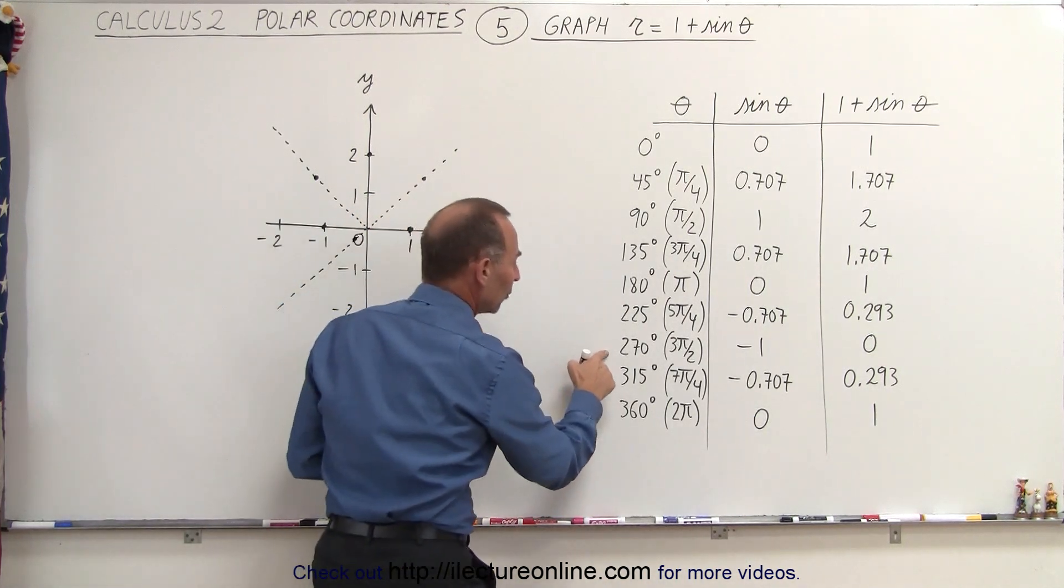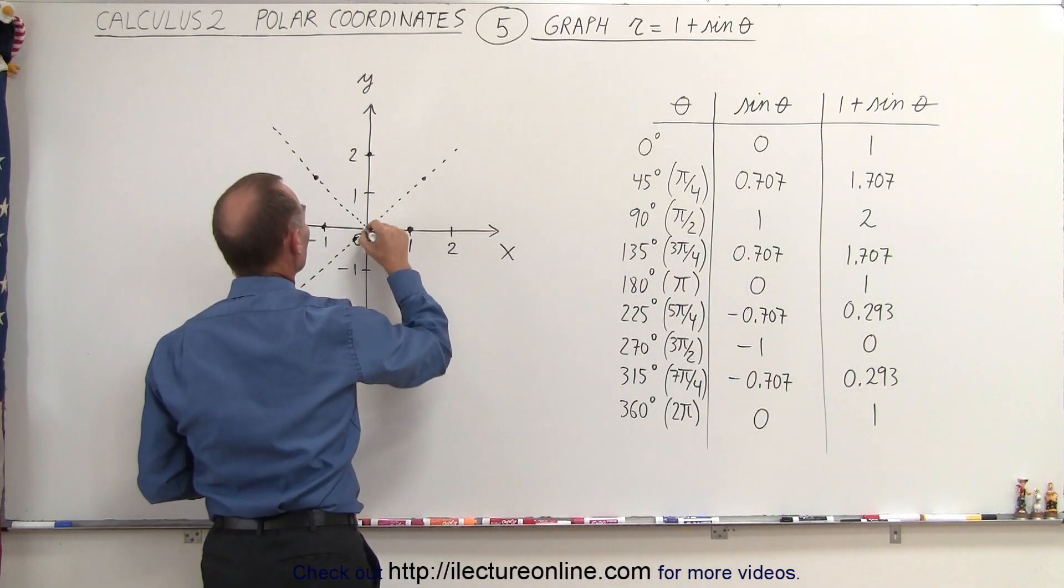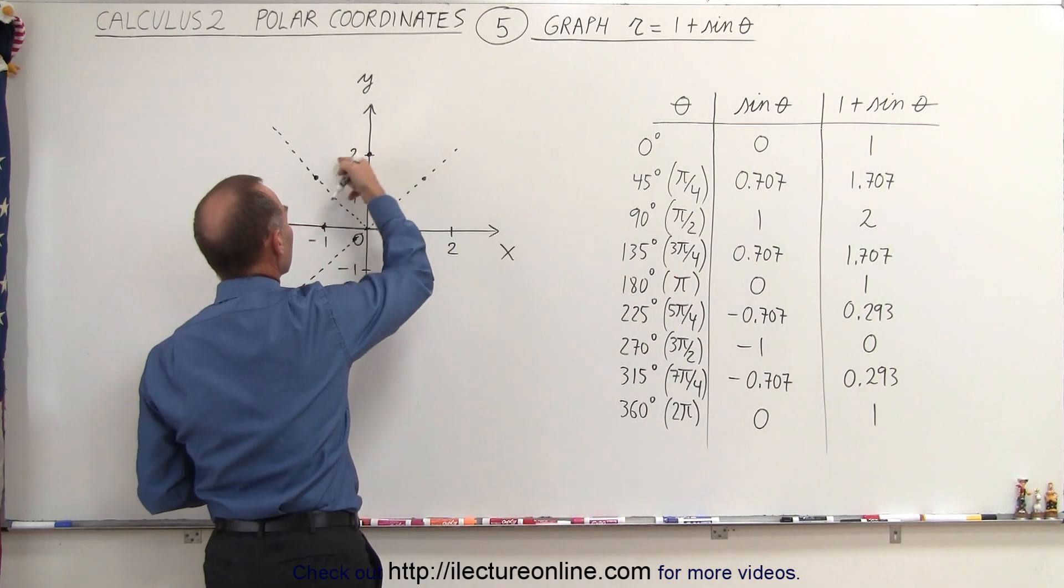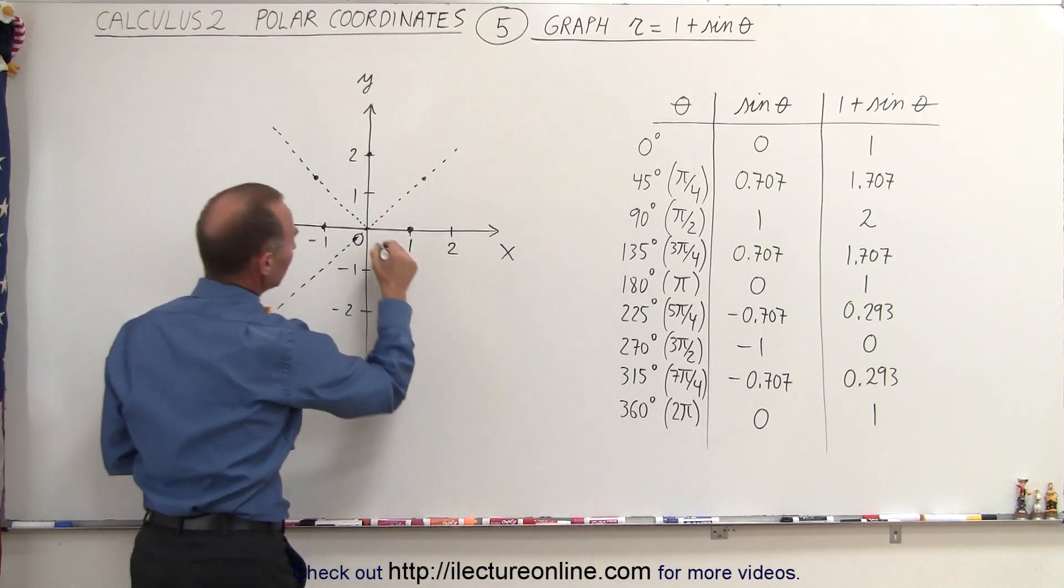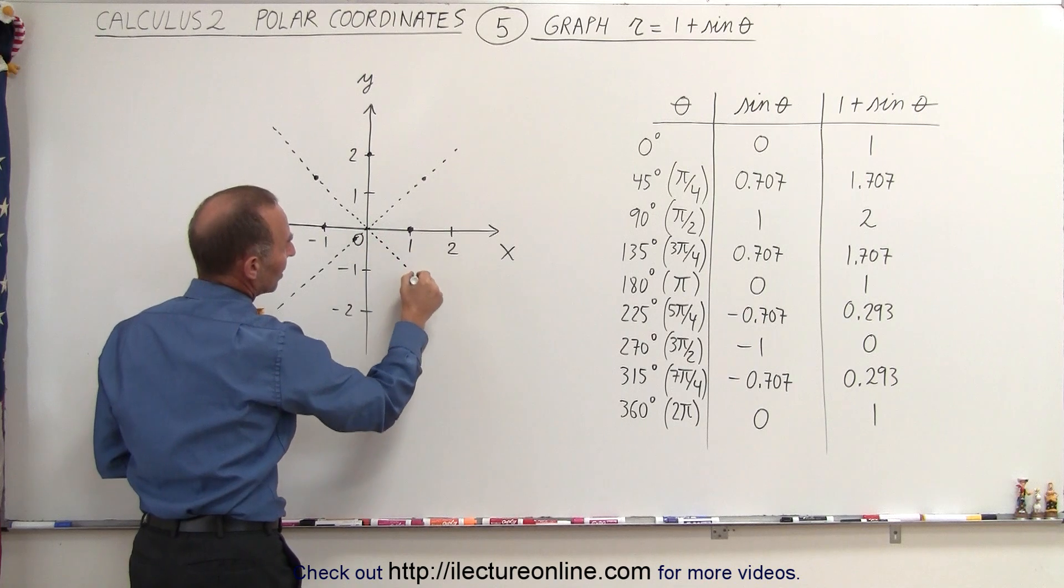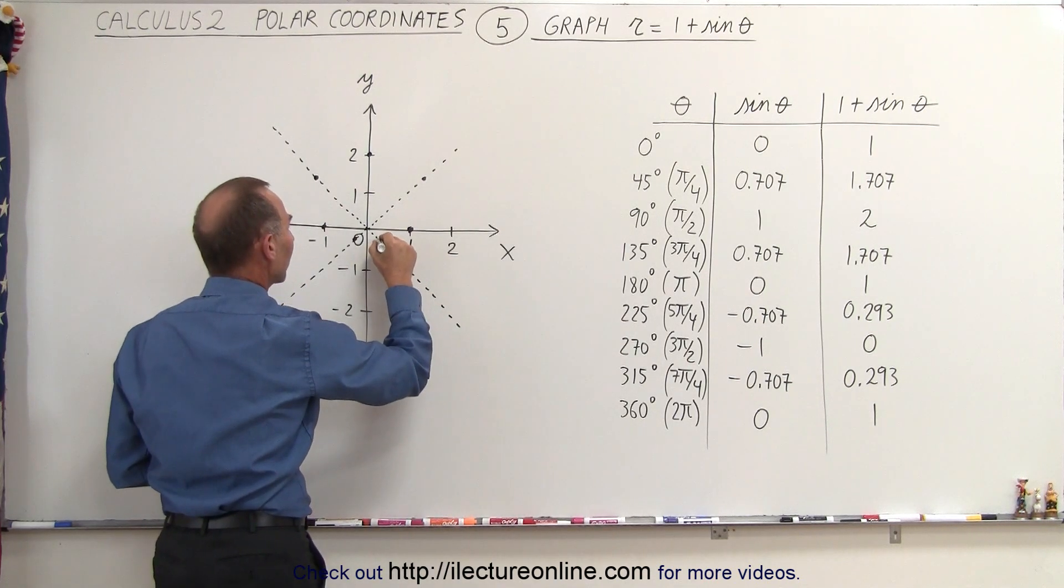Finally, at 270 degrees, the function equals 0, which puts us right at the origin. If you connect these points, you end up with something that looks like this. Continuing at 315 degrees along this line, the function is roughly 0.3, right here.